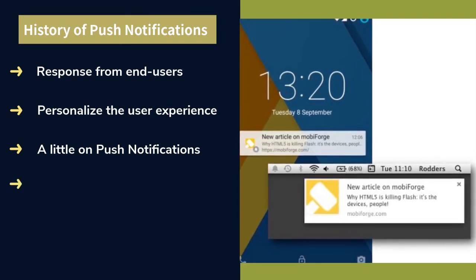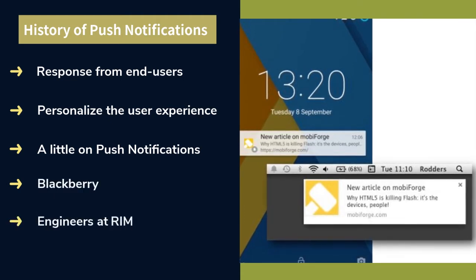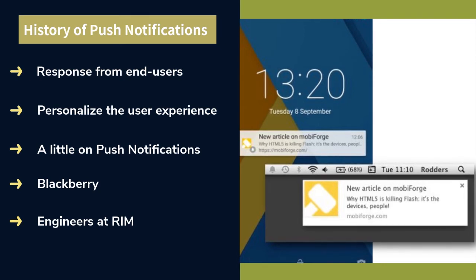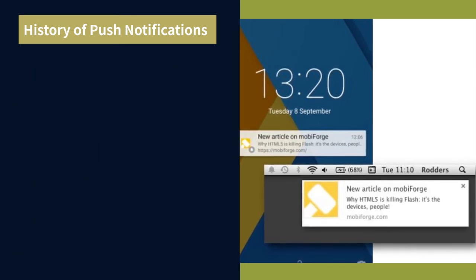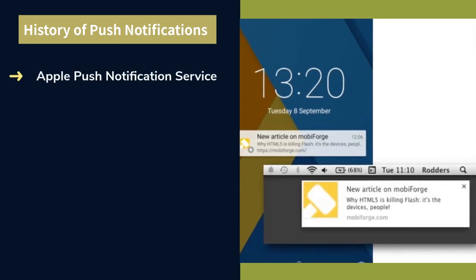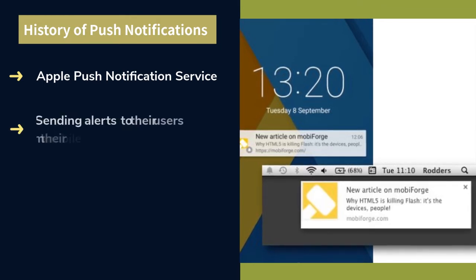Research In Motion (RIM) — it was engineers at RIM who started the first-ever email notification system on mobile phones. This development at RIM was being carefully noticed by Silicon Valley, and in June 2009, Apple introduced a new user experience called Apple Push Notification Service (APNS). This shift in technology allowed companies to send alerts to their users from their mobile applications.